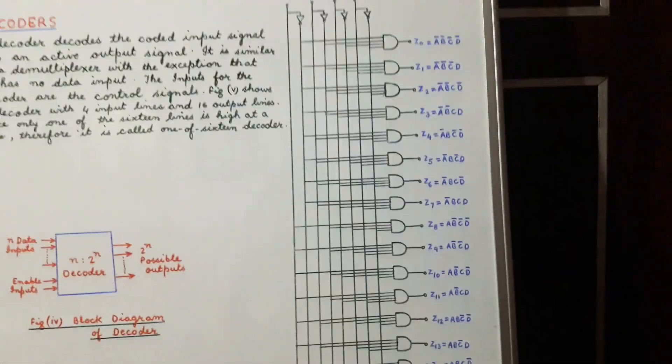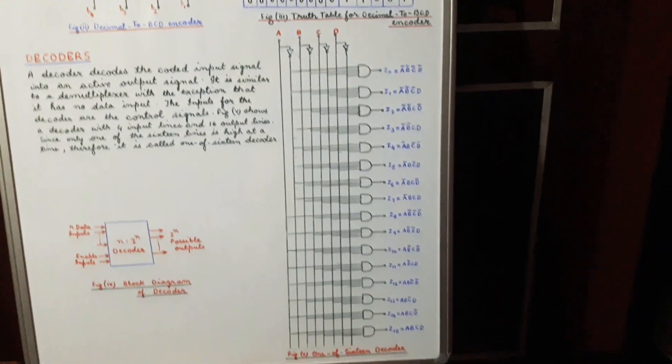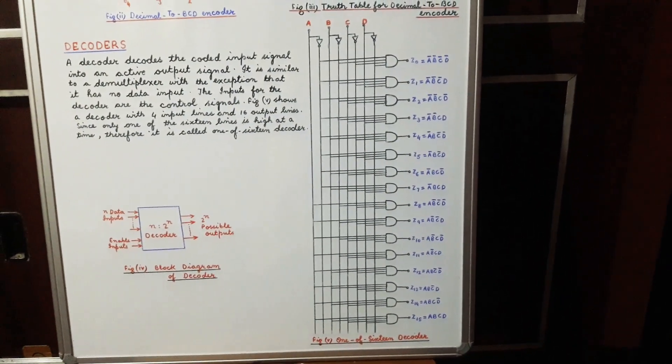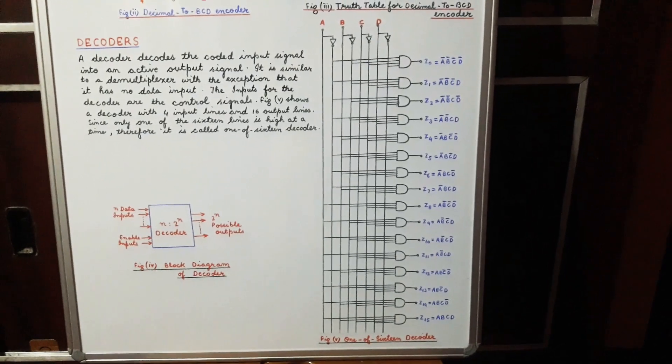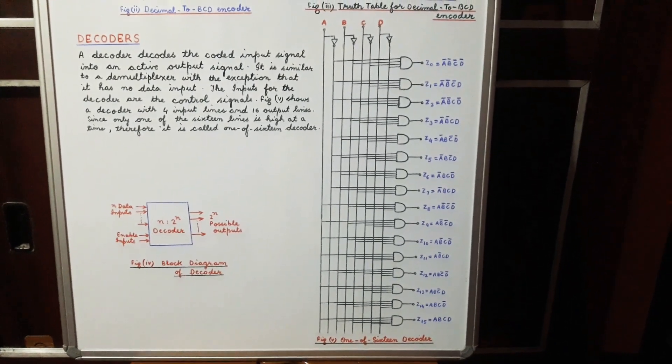Figure 5 shows a decoder with 4 number of input lines and 16 number of output lines. Since only one of the 16 lines is active high at a time, we call it a 1-of-16 decoder. From this figure we find that there are 16 output lines and 4 data inputs, which is why it is called a 1-of-16 decoder — because only one of the 16 lines is active at a time.